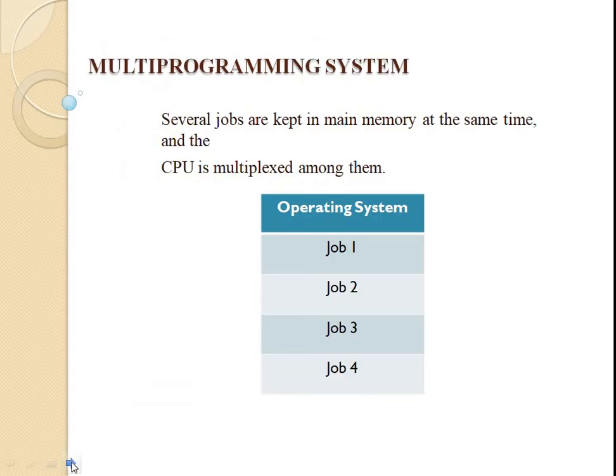The next is multiprogramming system. When two or more programs reside in main memory at the same time, it is referred to as multiprogramming. Multiprogramming assumes a single shared processor and increases CPU utilization by organizing jobs so that the CPU always has one job to execute. The advantage of multiprogramming is high and efficient CPU utilization. The disadvantage is that CPU scheduling is required, and to accommodate many jobs in memory, memory management is also required.